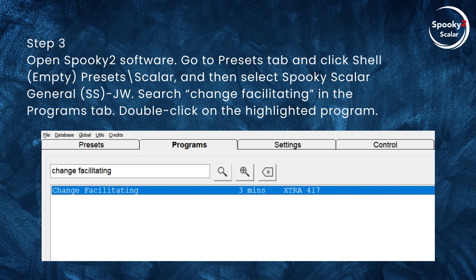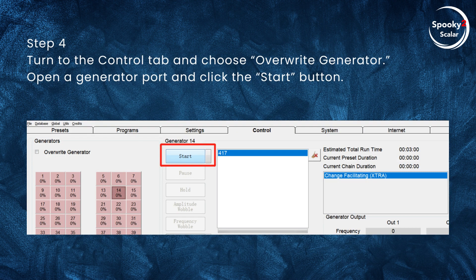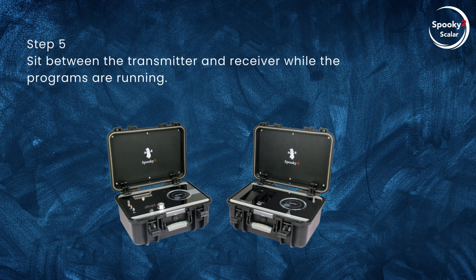Continuing Step 3: select SS JW. In the Programs tab, search for Change Facilitating and double-click on the highlighted program. Step 4: Turn to the Control tab, choose Overwrite Generator, open a Generator Port, and click the Start button. Step 5: Sit between the Transmitter and Receiver while the programs are running.